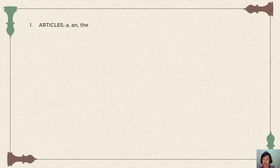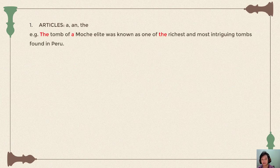The first type of determiner is articles: a, an, and the. I hope that you have learned this in Chapter 3 before. For example: 'The tomb of Moje Ali was known as one of the richest and most intriguing tombs found in Peru.' Here 'the richest' uses 'the' because it is superlative, and 'Moje Ali' is general, while 'the tomb' is specific.